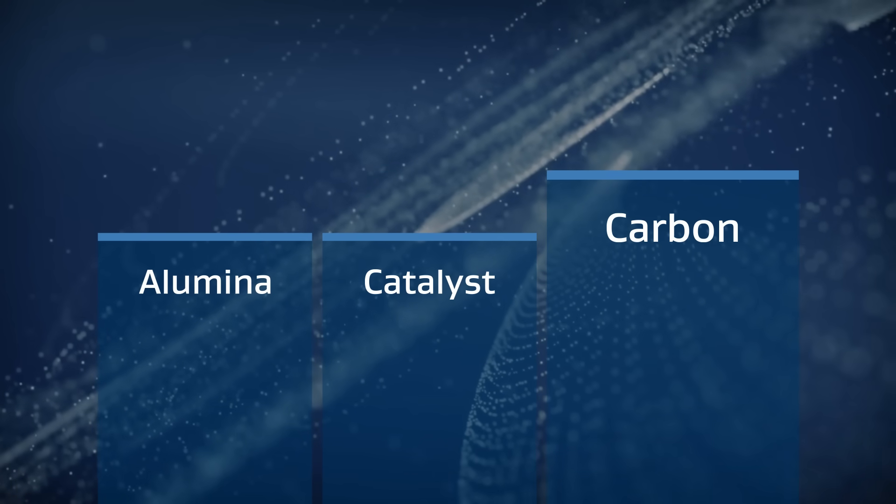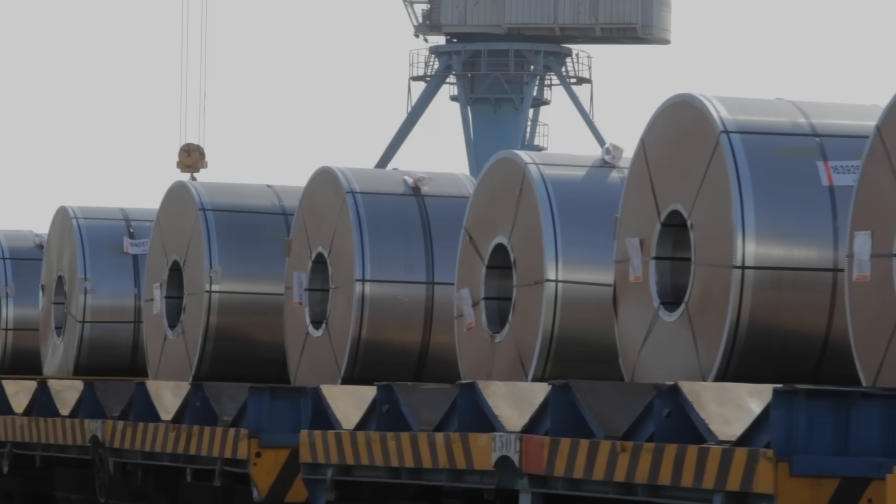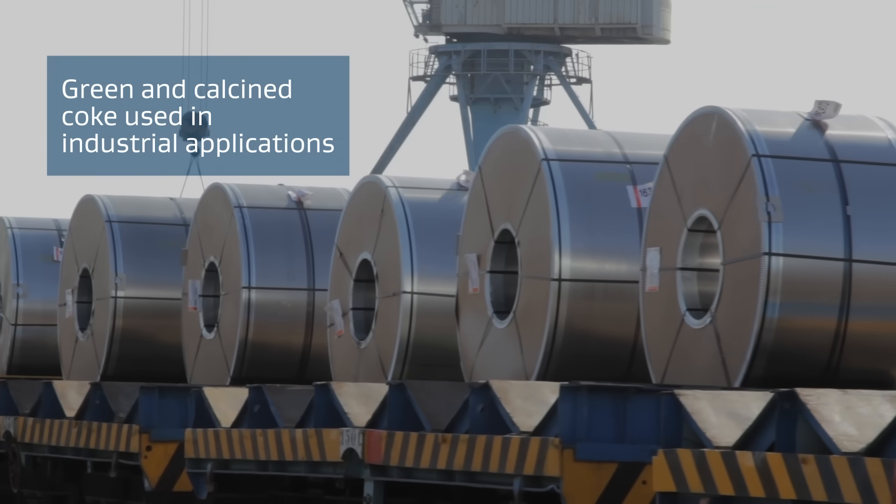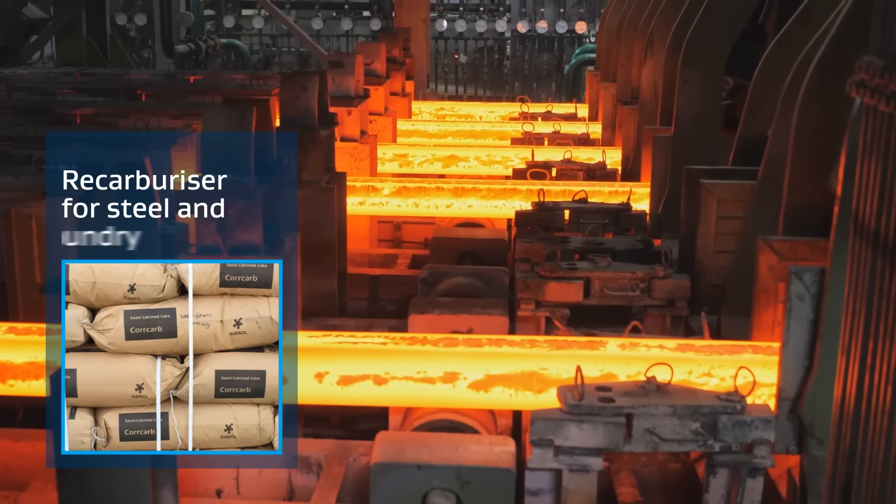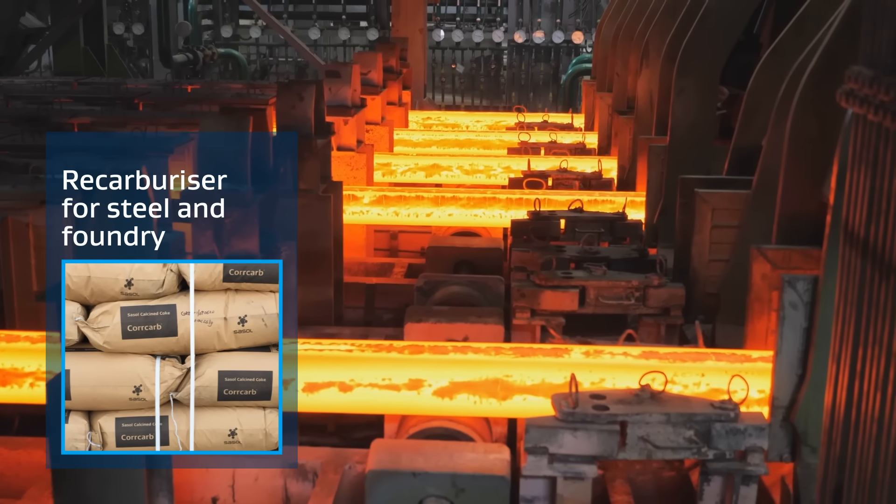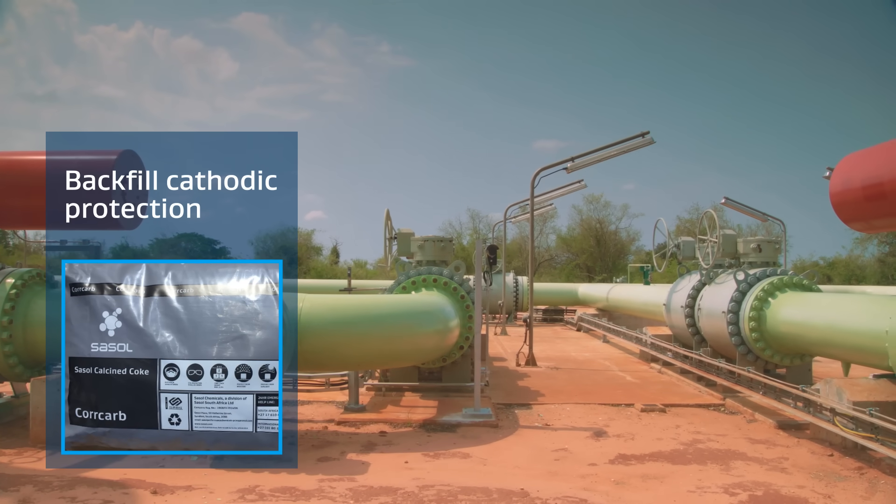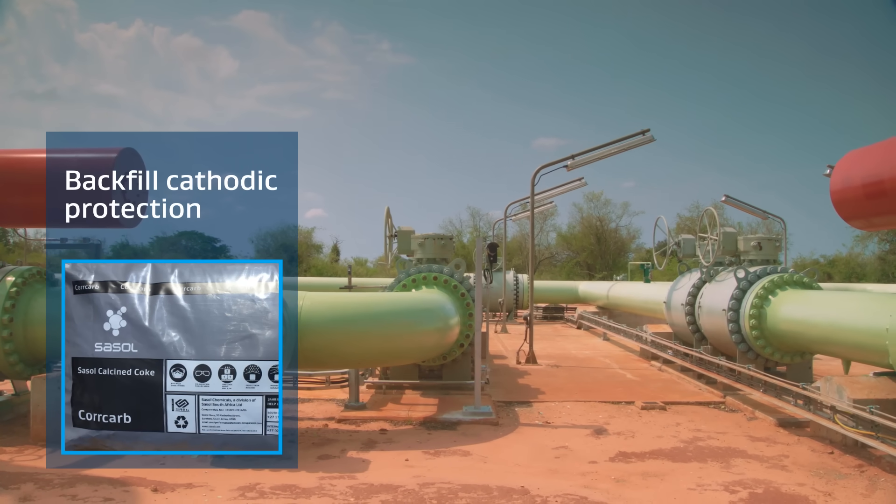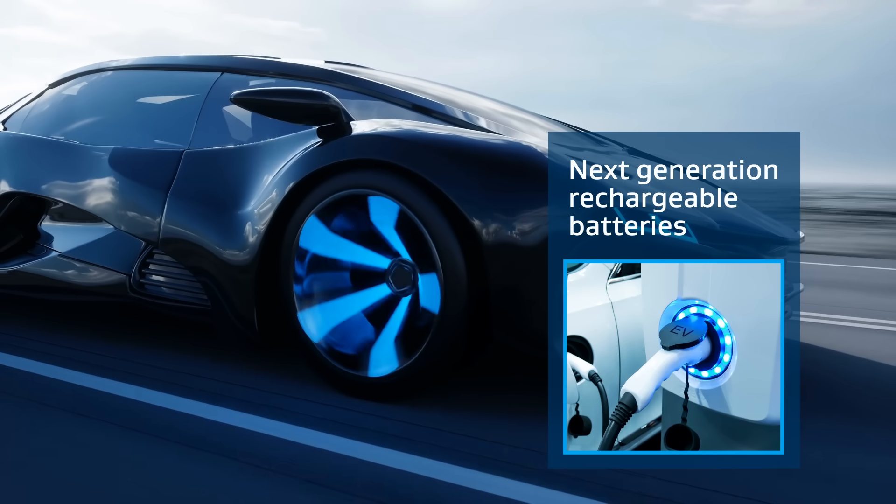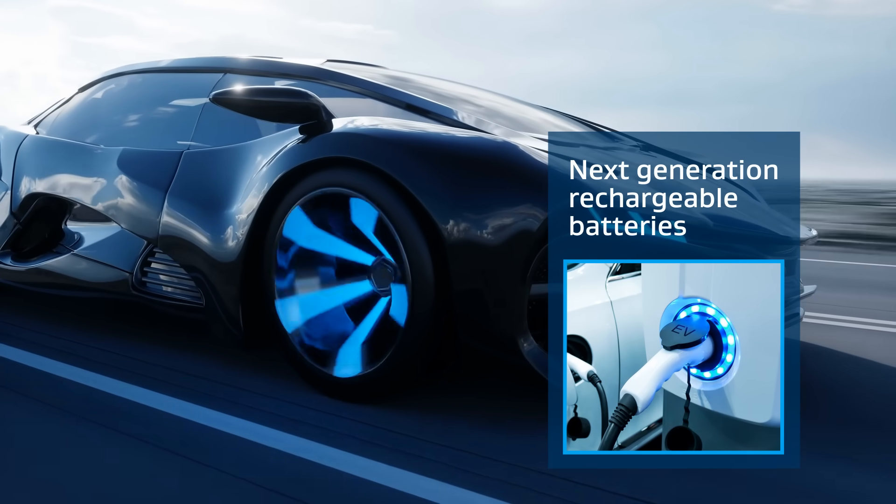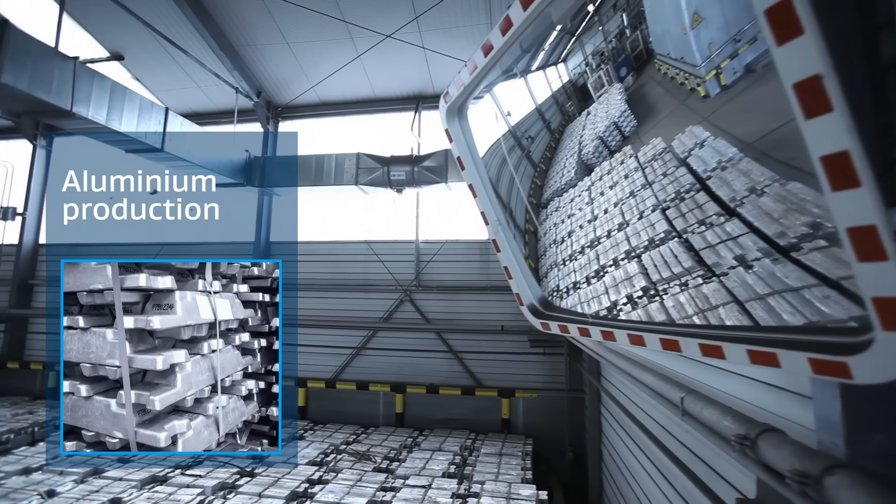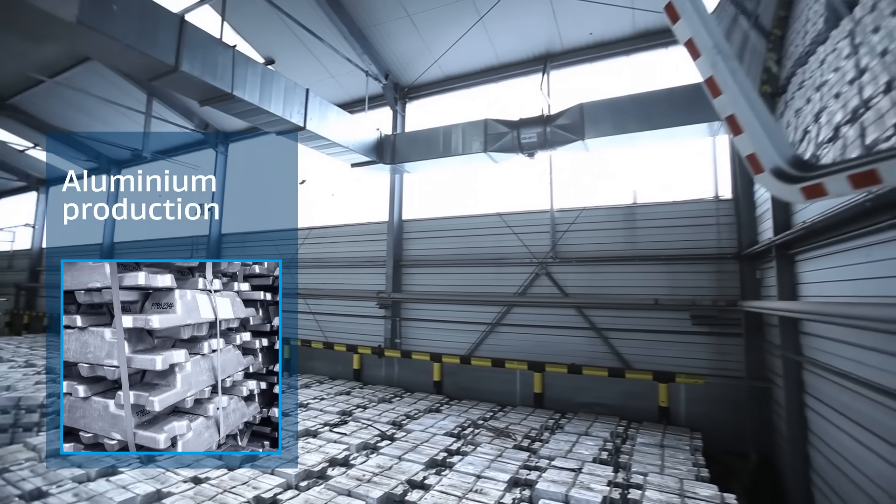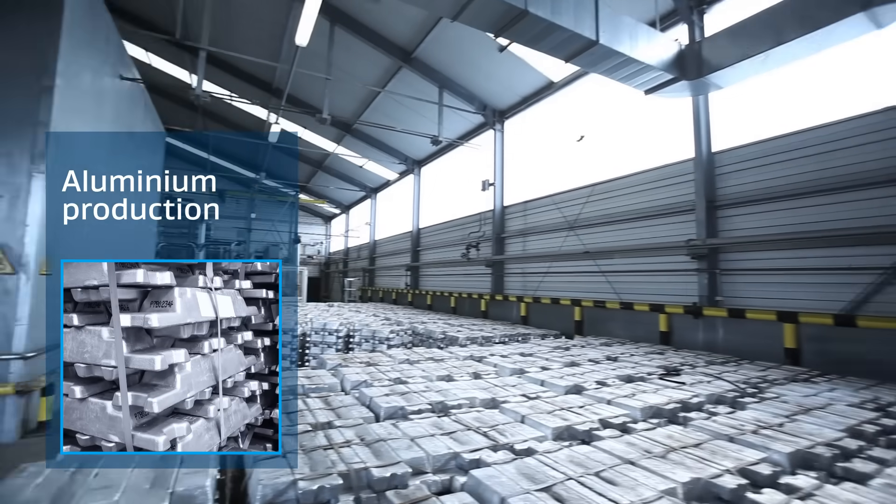The carbon division produces green and calcined coke, which is used in a range of industrial applications such as recarburiser in the steel industry, as backfill for cathodic protection in environmentally sensitive areas, and in the production of anodes used in next-generation rechargeable batteries. Our high-quality calcined coke is used as a sweetener in the production of anode blocks for aluminium production.